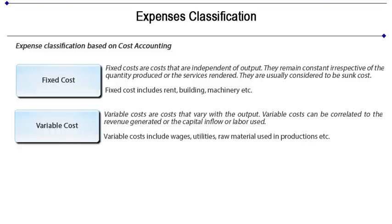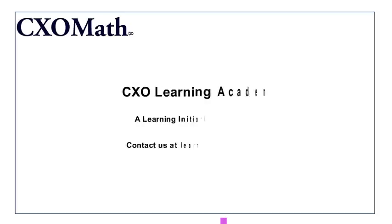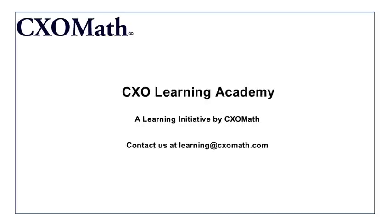Variable costs are costs that vary with the output. Variable costs can be correlated to the revenue generated, the capital inflow, or the labor used. Variable costs include wages, utility, and raw material used in production. Thank you for watching this video, presented to you by CXO Learning Academy.